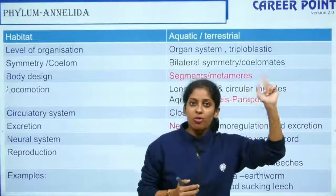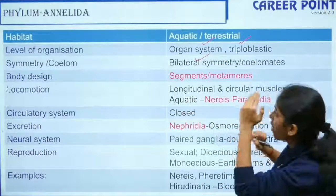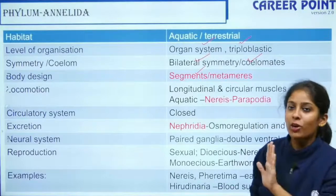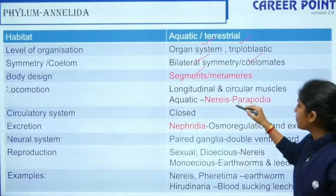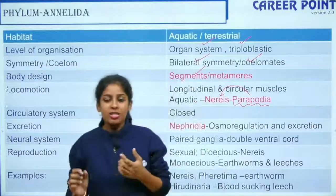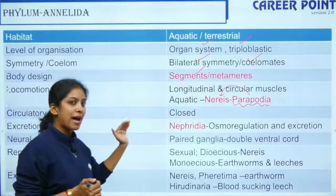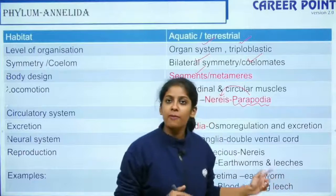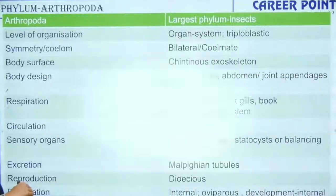Now talking about Phylum Annelida — we have moved to organ system level, and henceforth everything will be organ system. Everything will be triploblastic with bilateral symmetry. From Annelida onwards, everything is coelomate. They also have segments. Only notochord is absent. Aquatic annelids have parapodia for movement — example is Nereis. Their circulatory system is closed. For excretion they have nephridia. The earthworm is a terrestrial annelid. They can be hermaphrodite as well as dioecious.